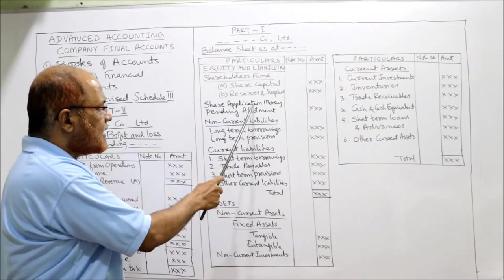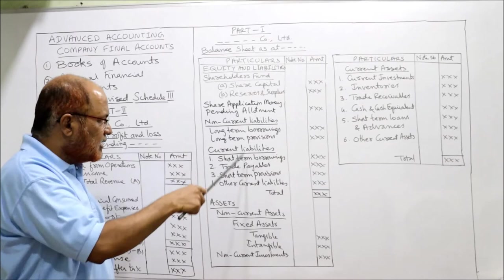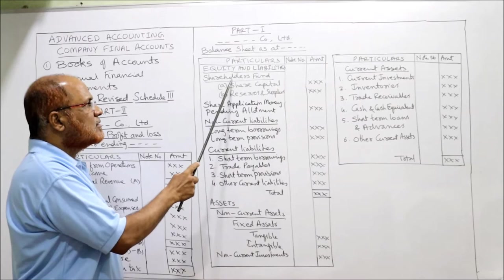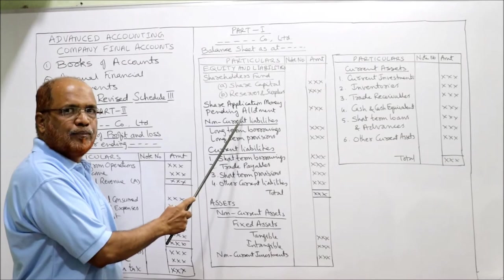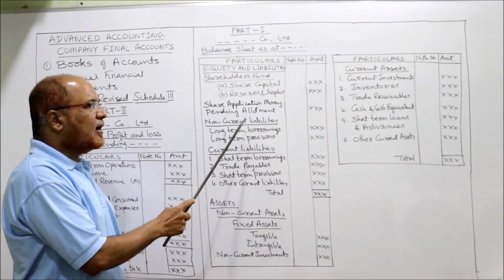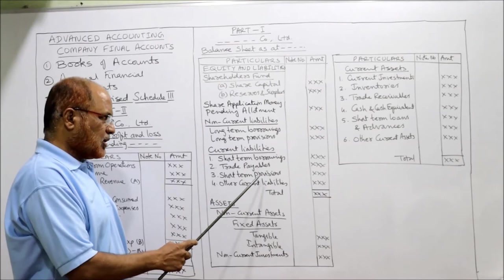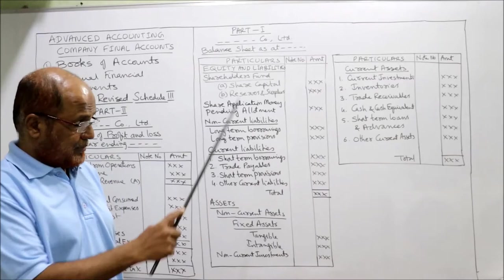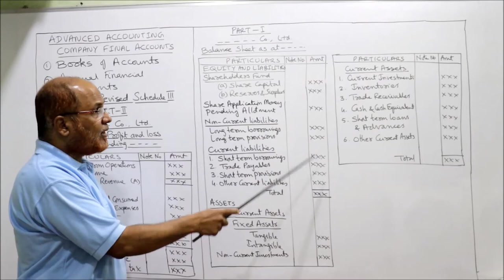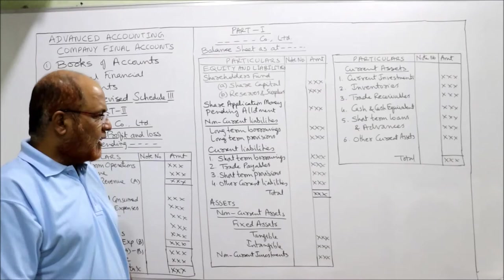We will discuss these items in more detail later. For now, focus on what items come under the statement of profit and loss and balance sheet. Under shareholders' fund: share capital and reserves and surplus. Then share application money pending allotment - this won't appear in every problem, only when given. Under non-current liabilities: long-term borrowings and long-term provisions. Under current liabilities: short-term borrowings, trade payable, short-term provisions, and other current liabilities. This gives the total of the equity and liabilities side.